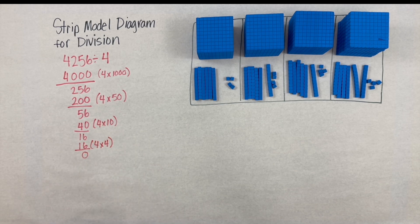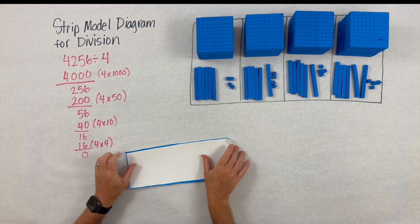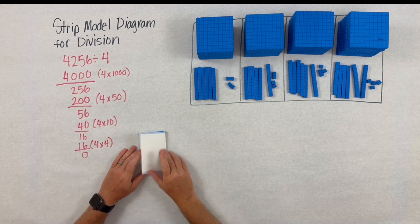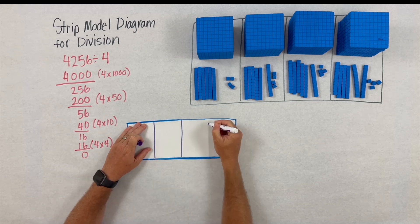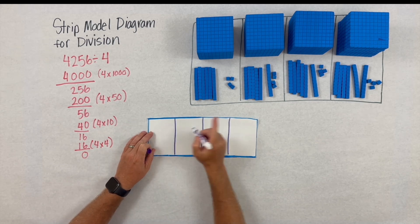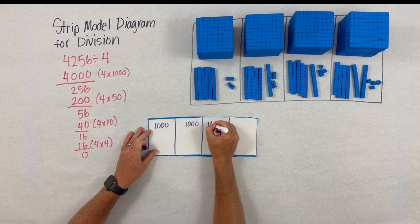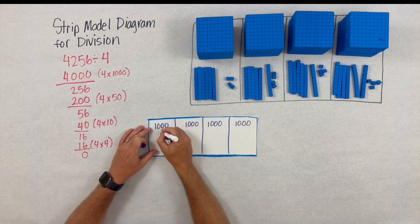Here we've begun to use the concrete model of the base 10 blocks and the abstract thinking of recording in numerals. This is where we make a connection.